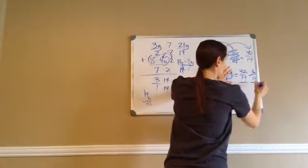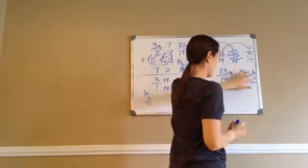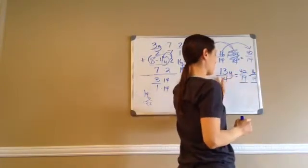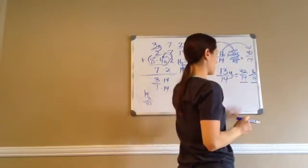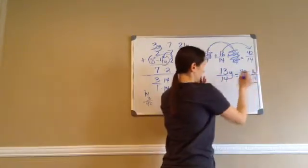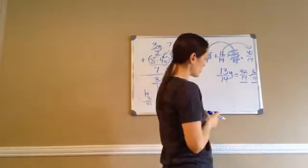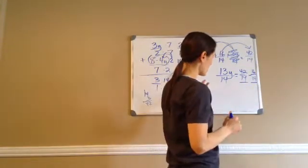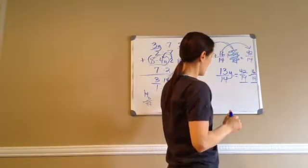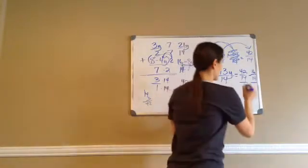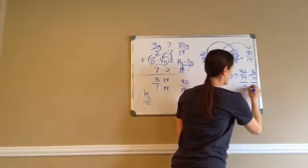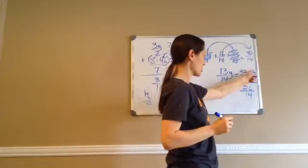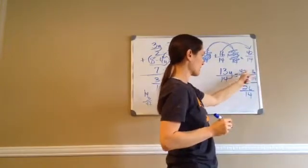Leave the y term alone and let's do our like terms over here. Since this one has a y with it we have to leave it alone. So 42 minus 16 gives us 26 over 14 — we're just subtracting the numerator.